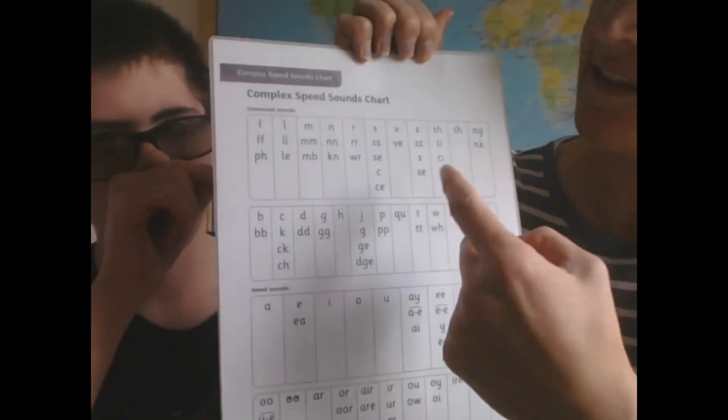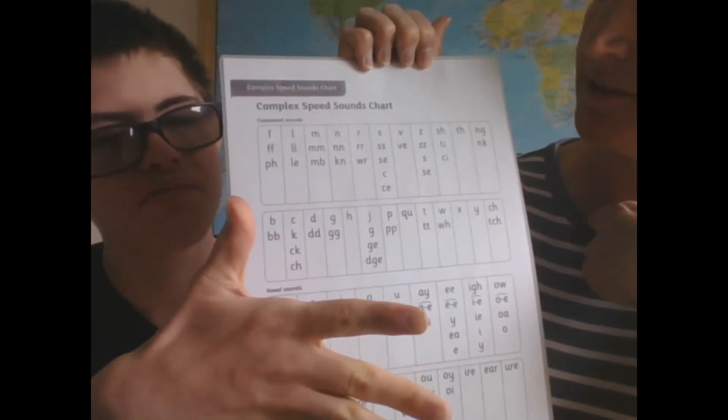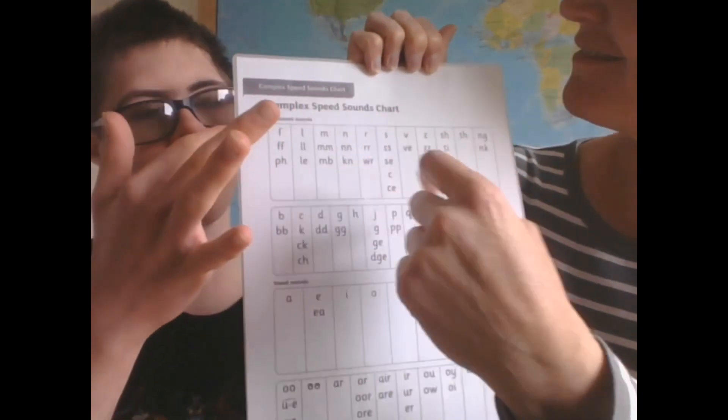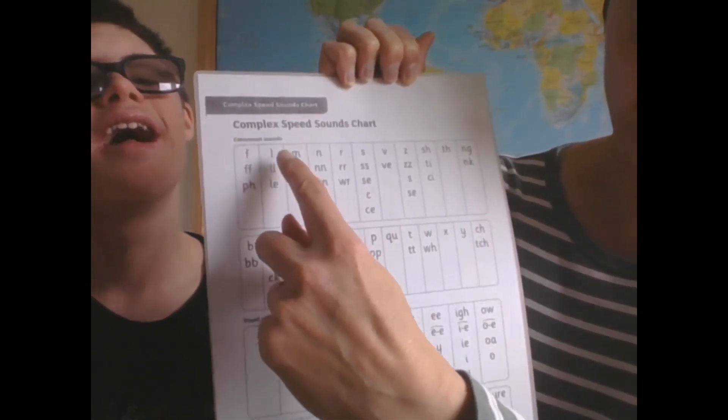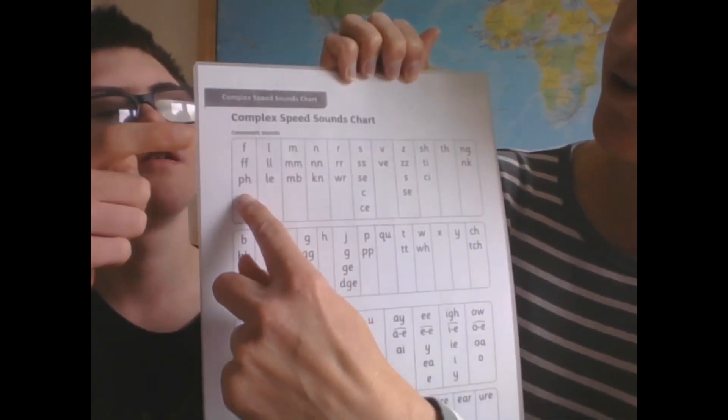You can see that each one of those boxes represents a different sound, and there are several different ways of spelling most sounds. If you look in the F box, you can spell it with a single F, a double F, or PH, but they all say the same sound.